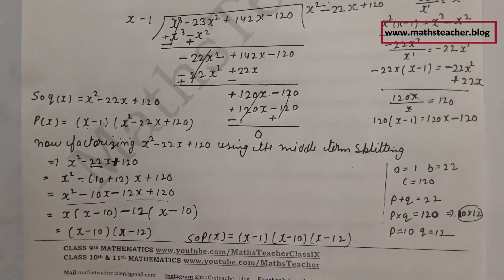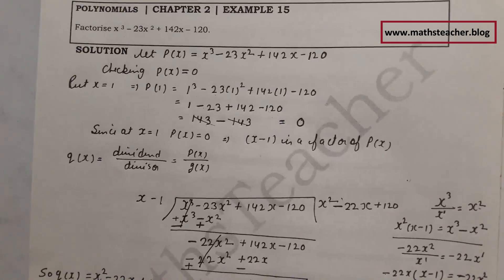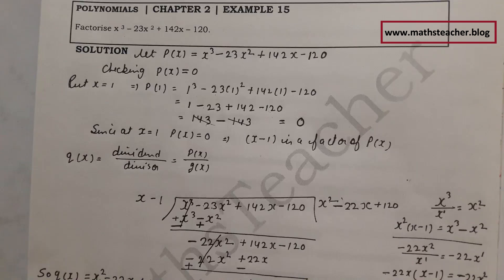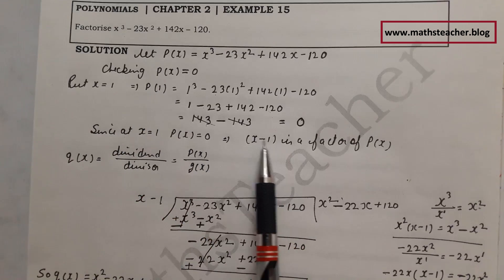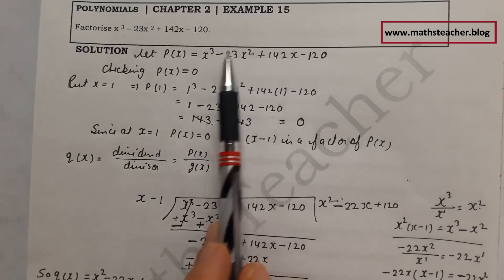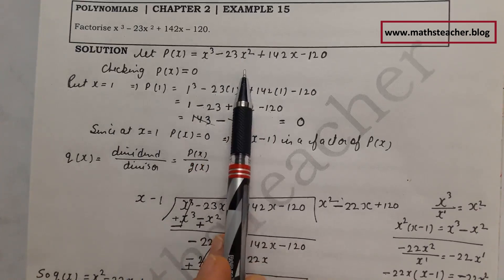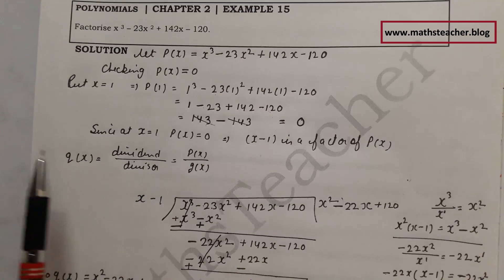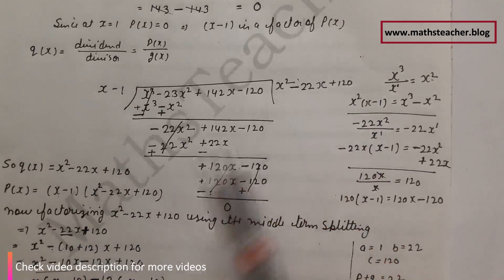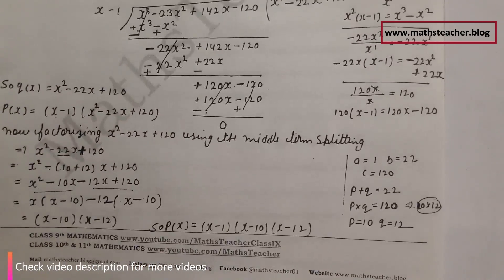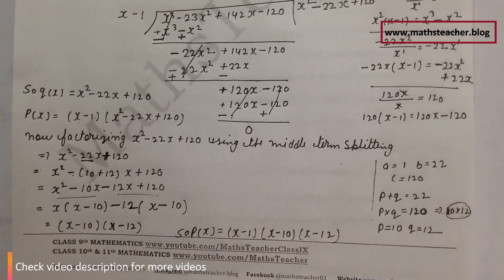So the three factors of the cubic equation p(x) are x minus 1, x minus 10, and x minus 12. This is an important 4-mark question that will come in your exam in section D. Remember the steps: find a factor by trial method, divide by that factor to get the quotient, then split the remaining quadratic into two factors. I hope you understood this question. If you have any doubt, please comment below. Thank you.